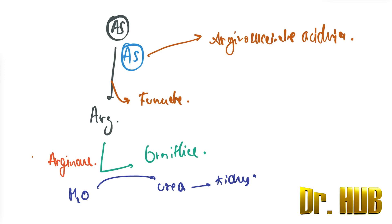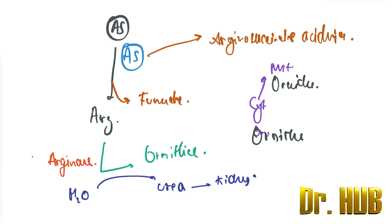The next step is the transport of ornithine — this is the transition between the cytoplasm and the mitochondria. The enzyme involved is ornithine permease. A defect in ornithine permease leads to HHH syndrome.